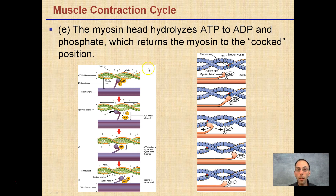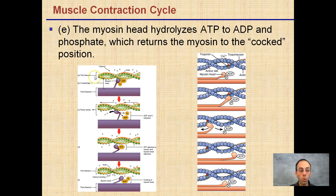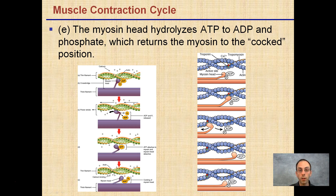Lastly, the myosin head undergoes hydrolysis — using water to break ATP into ADP and phosphate — which returns myosin to the cocked position. This means it is now ready to grab onto another actin molecule before moving over again. ATP is required for this entire process to occur.